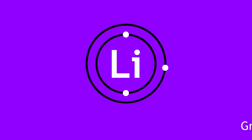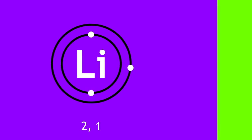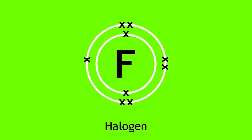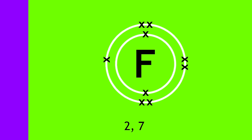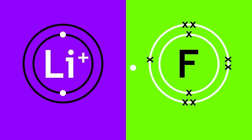Lithium is a group 1 metal and will therefore have 1 electron in its valence shell. Its electronic structure is 2 and 1. Fluorine is a halogen and has 7 electrons in its valence shell. Its electronic structure is 2 and 7. Lithium transfers its valence electron to fluorine, forming a lithium ion and a fluoride ion.